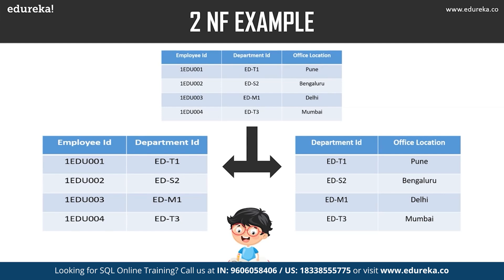To bring the table to second normal form, we break it into two parts: the first table has employee ID and department ID as columns, and the second has department ID and office location. We have removed the partial functional dependency. Now, office location is fully dependent on the primary key of its table, which is department ID.